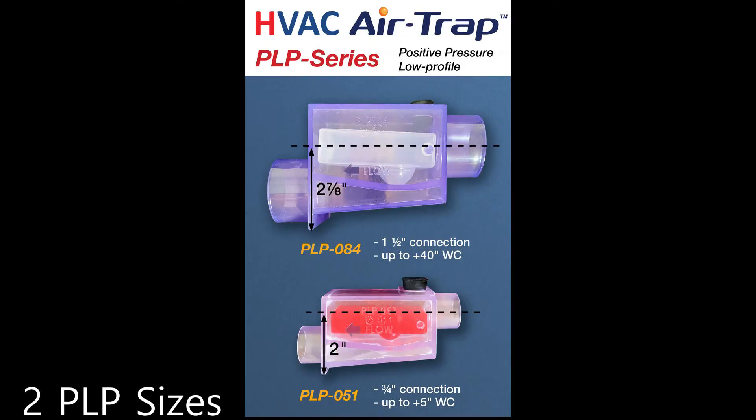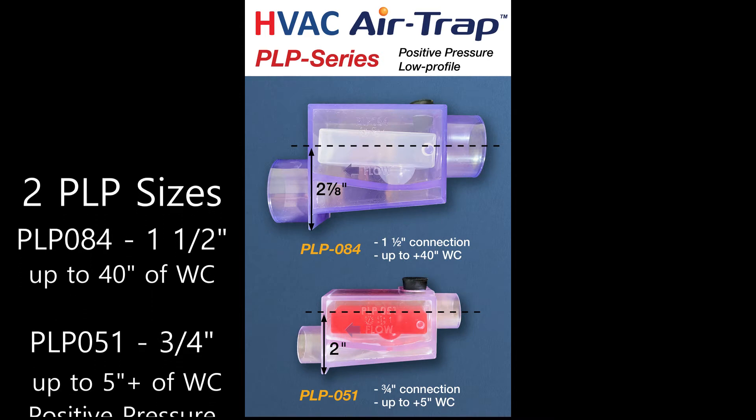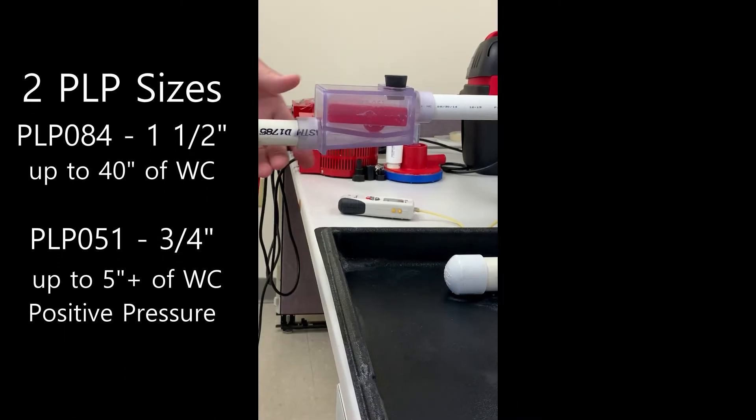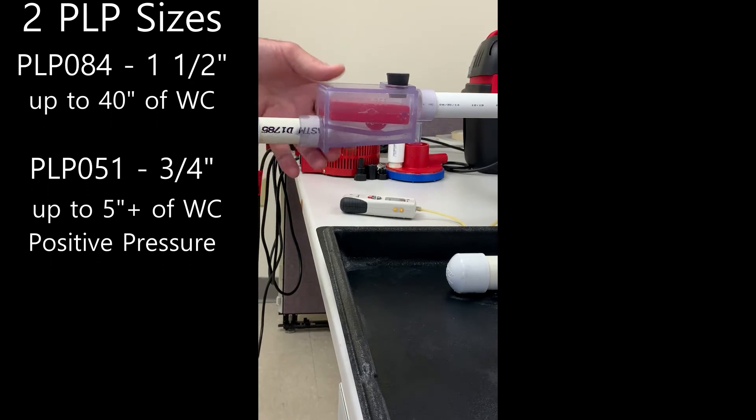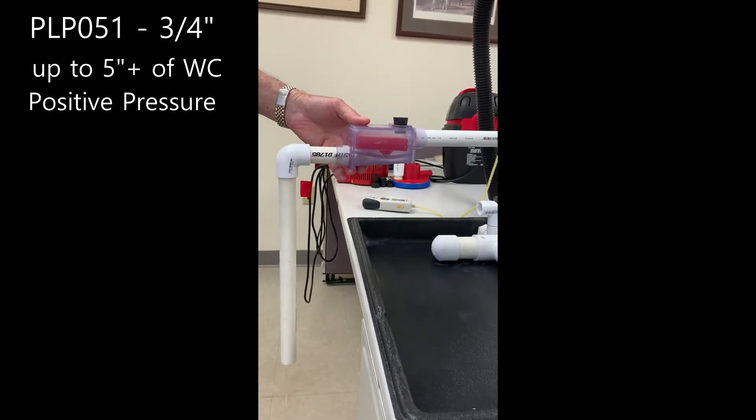This is the smaller version of the tube. The larger one is one and a half inch pipe size connections and it'll handle up to 40 inches of positive pressure. This is three-quarters of an inch connection. It'll handle five plus inches of water column, positive pressure.